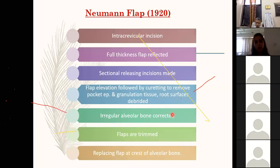Neumann followed the original Widman and described an intracrevicular incision with full-thickness flap reflection. Both these techniques were for pocket elimination. Sectional releasing incisions were made, the flap reflected, granulation tissue and pocket epithelium along with root surfaces were debrided, irregular alveolar bony contour was corrected, and flaps were trimmed and replaced at the crest of alveolar bone.